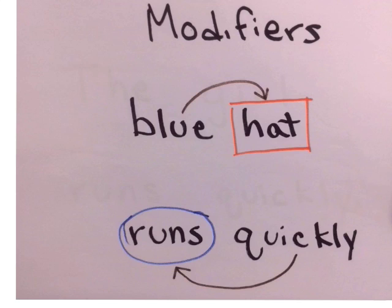We're also going to look at modifiers, words that describe nouns or verbs. On top, you see the word blue. That's an adjective. It's describing the word hat. And we'll draw an arrow from the word blue to the word hat. So we know that blue is modifying or describing the hat.